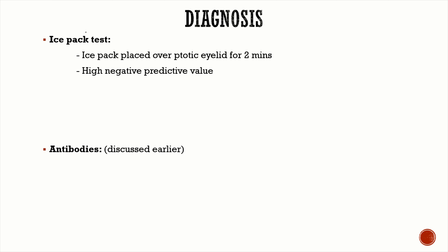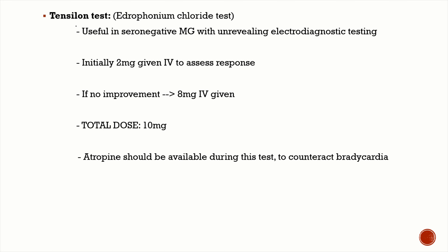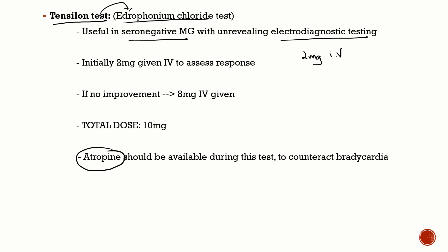For diagnosis, the ice pack test is a simple bedside test: place an ice pack over the ptotic eyelid for two minutes. It is not diagnostic of MG but has a high negative predictive value. Serum antibodies have already been discussed. The Tensilon test uses edrophonium chloride and has a specific indication: myasthenia patients who are anti-AChR antibody negative with non-diagnostic electrodiagnostics but high clinical suspicion.